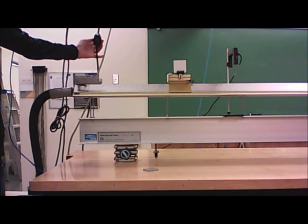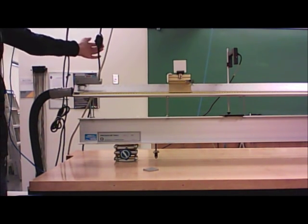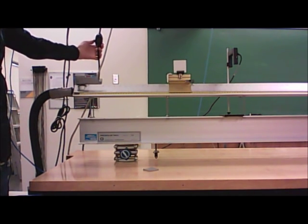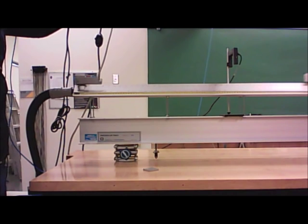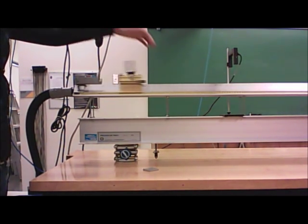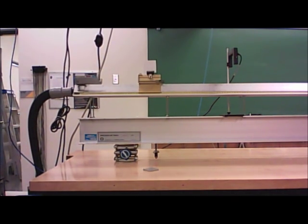The switch to turn the blower unit on is here, and it's a little bit loud, but I'm going to demonstrate right now how it works. So you turn the blower on, and as you can see, the glider moves almost friction-free when the air is blowing through the track.